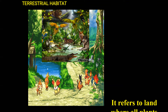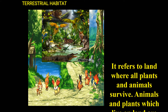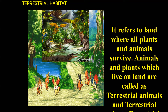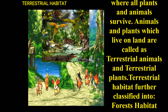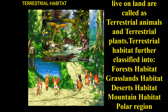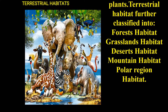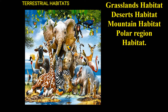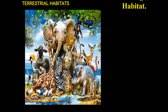Now let us discuss in detail about terrestrial habitats. Terrestrial habitat refers to land where all plants and animals survive. Animals and plants which live on land are called terrestrial animals and terrestrial plants. Terrestrial habitat is further classified into five groups: forest habitat, grassland habitat, desert habitat, mountain habitat, and polar region habitat.